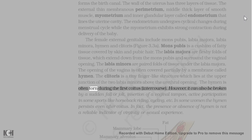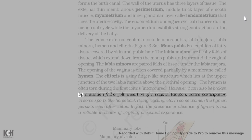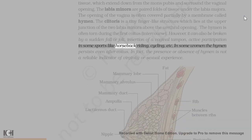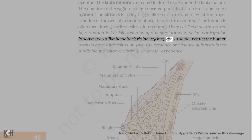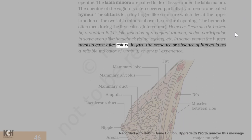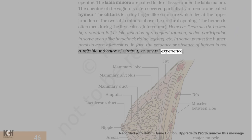The hymen is often torn during the first coitus (intercourse). However, it can also be broken by a sudden fall or jolt, insertion of a vaginal tampon, active participation in some sports like horseback riding, cycling, etc. In some women the hymen persists even after coitus. In fact, the presence or absence of hymen is not a reliable indicator of virginity or sexual experience.